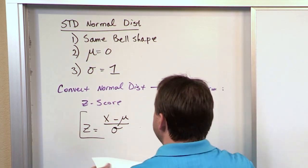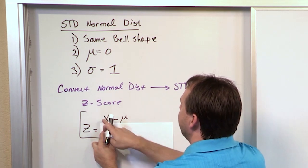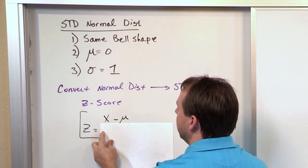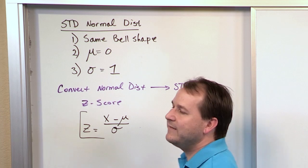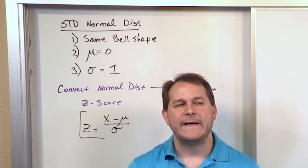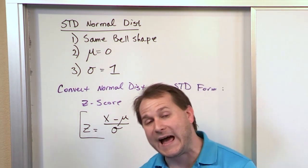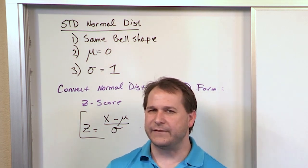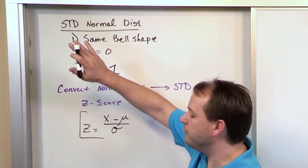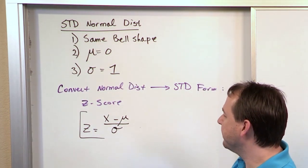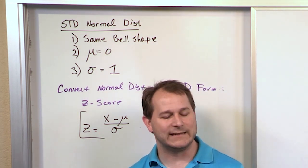The numerator — x minus the mean — tells you how far away your data point is from the mean in absolute terms. Then dividing by the standard deviation tells you how far away in terms of standard deviations: am I one standard deviation from the mean, one and a half, and so on. This is how we convert a regular distribution to a standard normal distribution. If this seems unfamiliar, go back to volume one and watch that lesson.